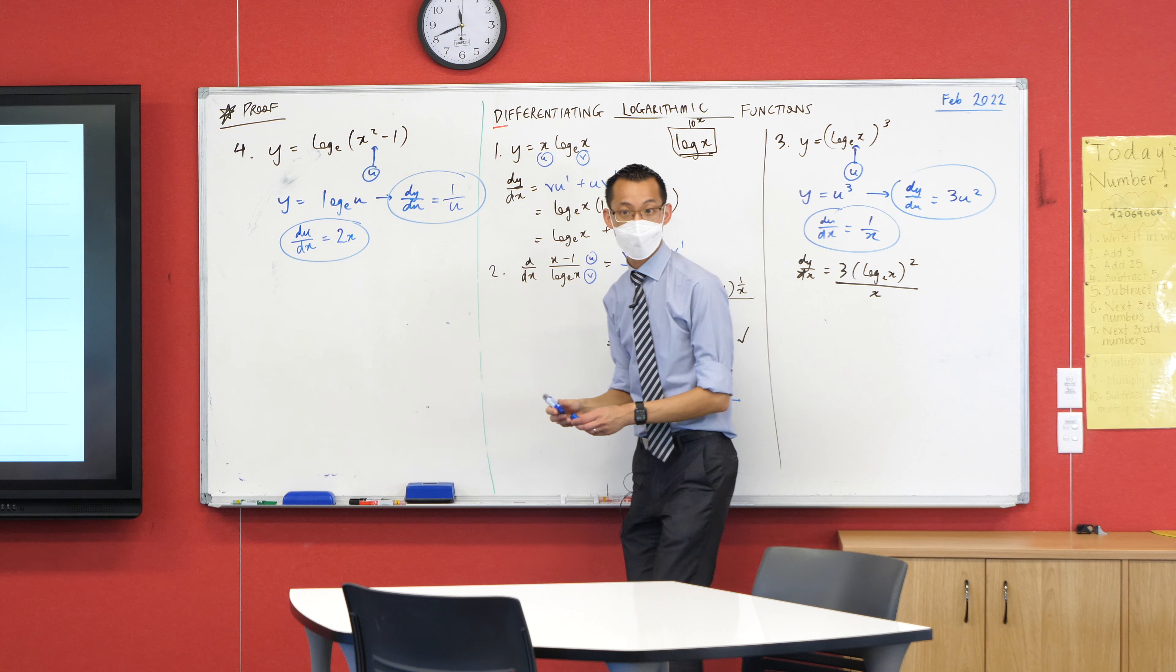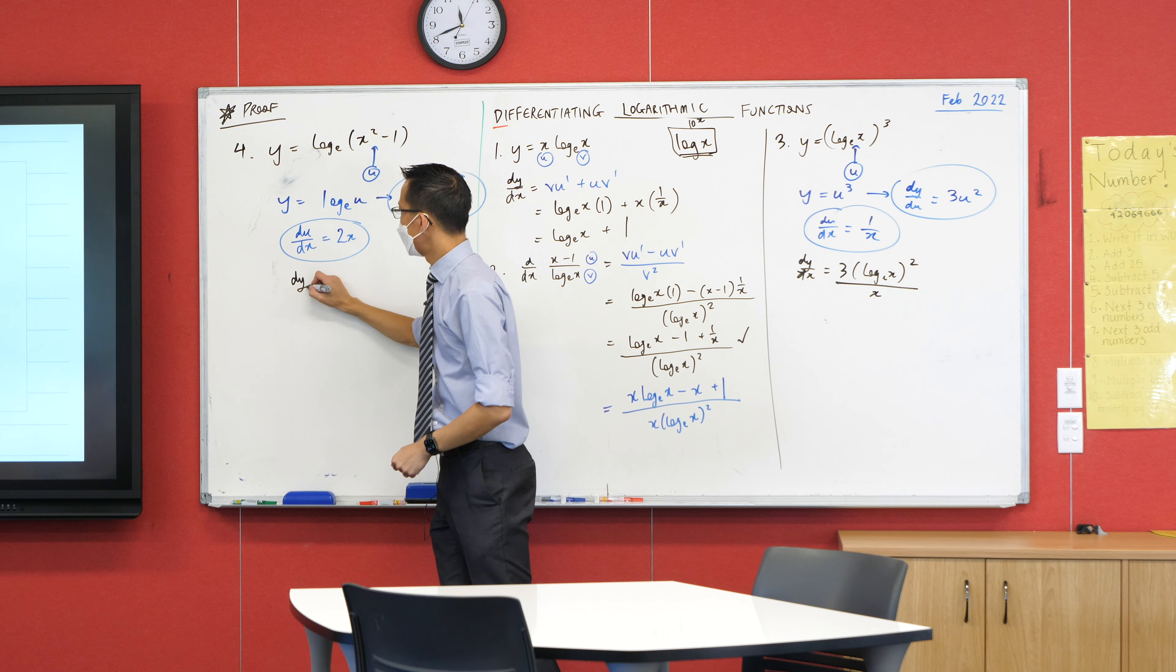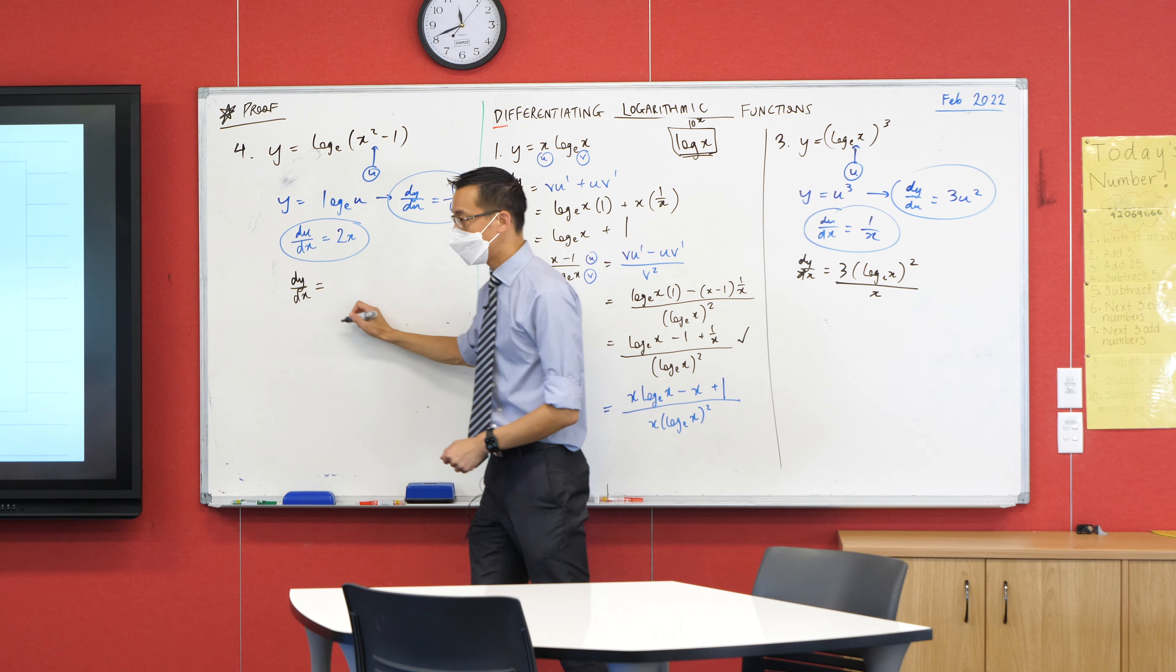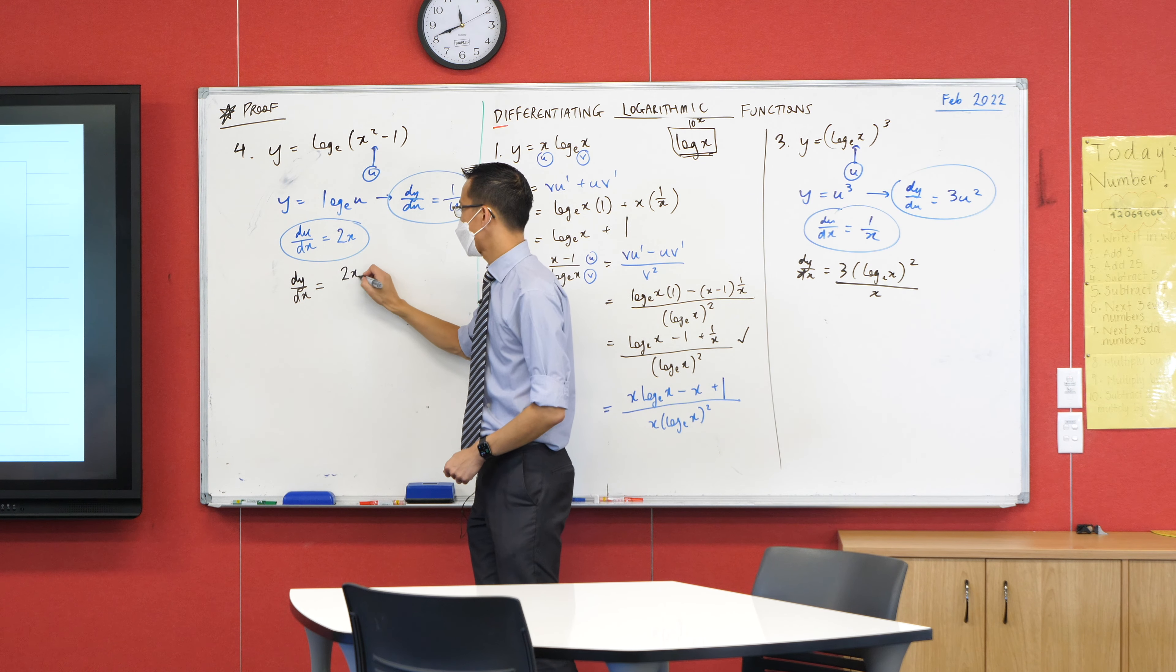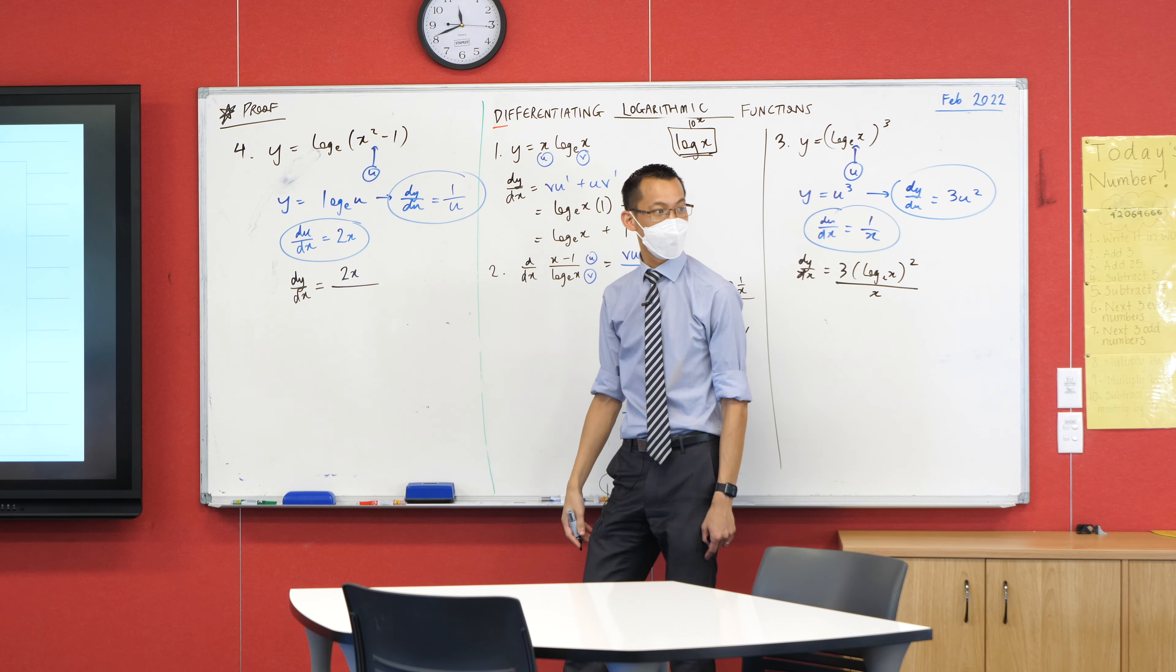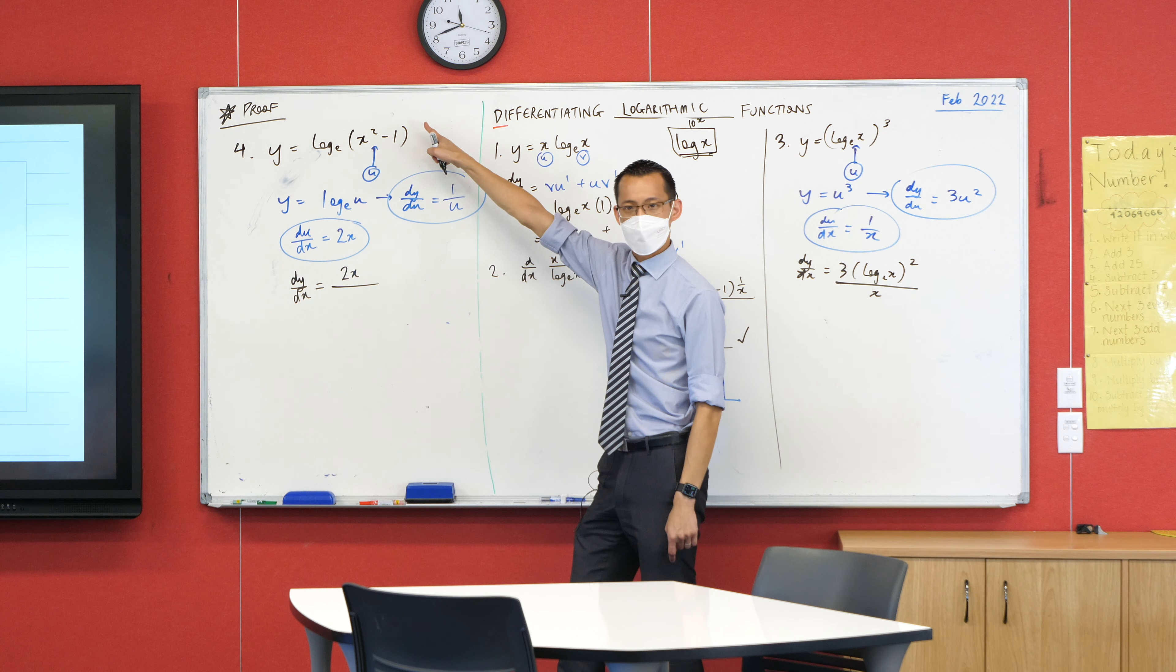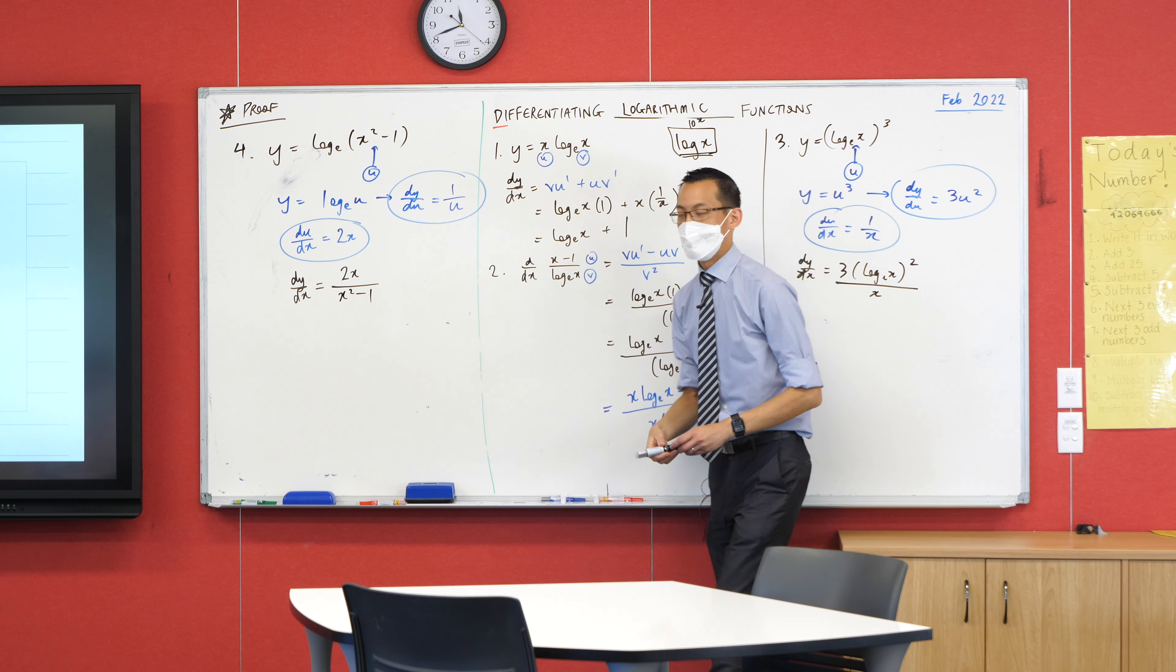I just need to piece these two together and I've got a derivative. So let's have a look. DY on DX equals, I'm going to do this one first, 2X. I could multiply this by one over U, but it's the same as dividing by U. And you guys know what U is. We set it right up there. X squared minus one.